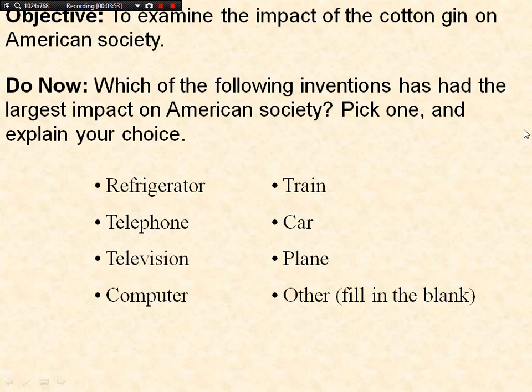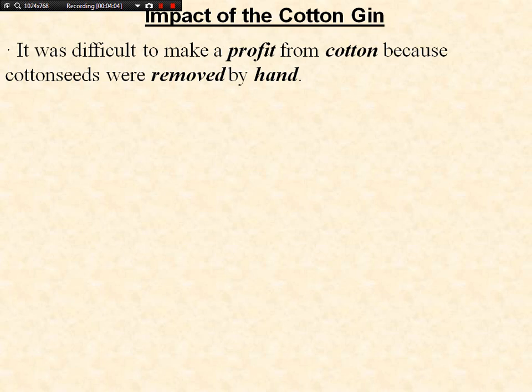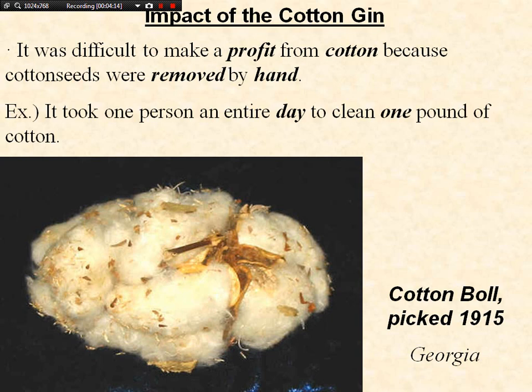At this time period, it was difficult to make a profit from cotton because cotton seeds are removed by hand. So slavery was actually on a decline in the United States. You would have to pick out the seeds and stems of the cotton — it took one person an entire day to clean one pound of cotton. Not very efficient.